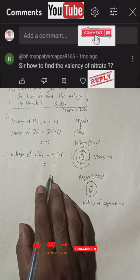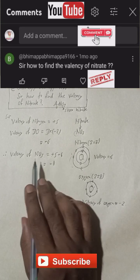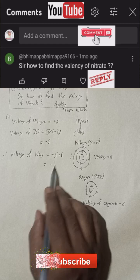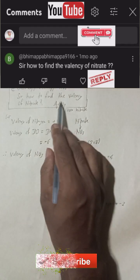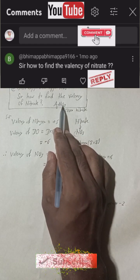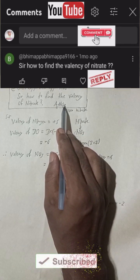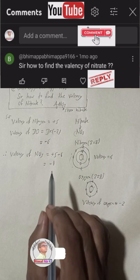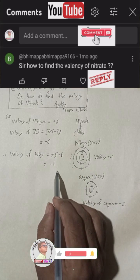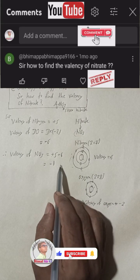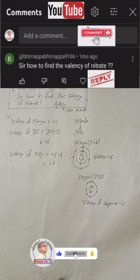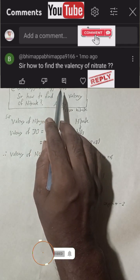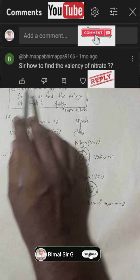That is why the valency of nitrate is minus 1. But in the crisscross method, I have taken 1, because in the crisscross method we consider the positive value — the positive valency — not the negative. So the answer to subscriber Bhimappa 9166's question is: the valency of nitrate is 1 (used as positive in crisscross).